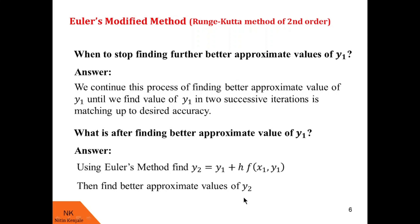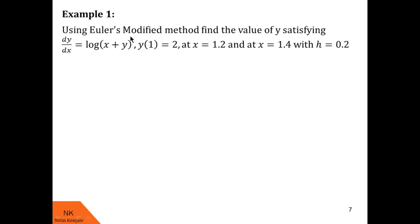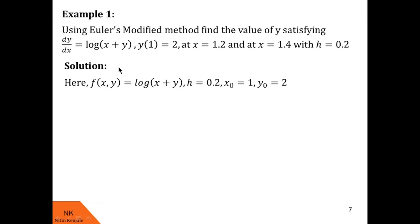Let us see an example. We are asked to use Euler's modified method to find y satisfying dy/dx = log(x + y) with initial condition y(1) = 2, at x = 1.2 and x = 1.4, taking h = 0.2. Given data: f(x, y) = log(x + y), h = 0.2, x0 = 1, y0 = 2. Since x0 = 1, x1 = 1.2 and x2 = 1.4. We first find y1 at x1.